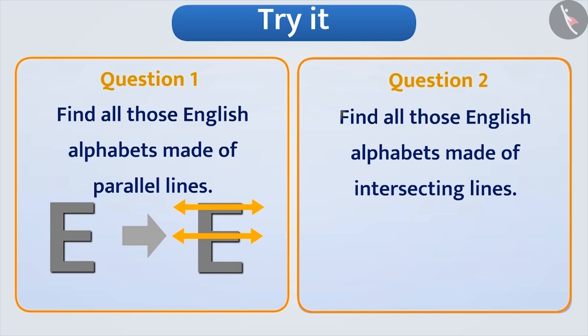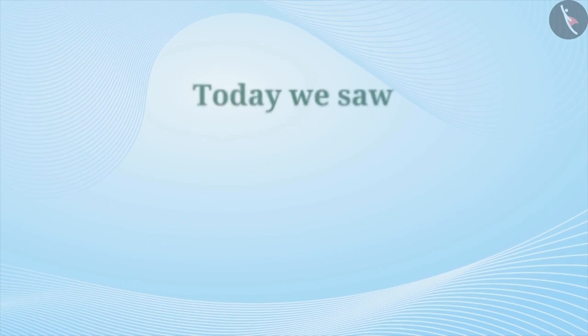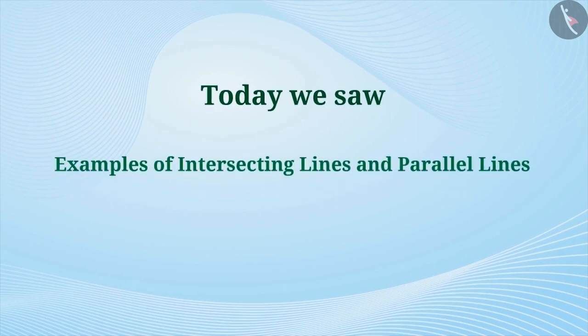Question 2: Find all those English alphabets made of intersecting lines. For example, the alphabet V — on extending the lines, they intersect. Hence, it is made of intersecting lines. Today in this video, we saw a few examples of intersecting lines and parallel lines. In the next video, we will clear some of the misconceptions related to them.